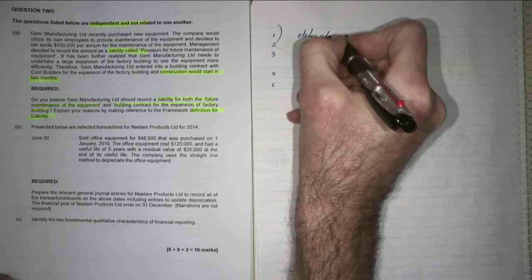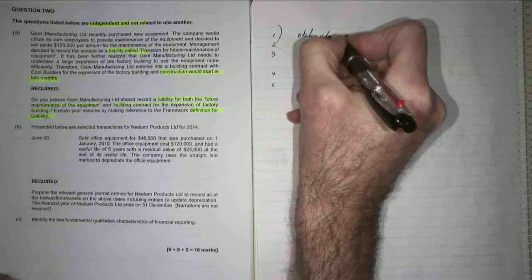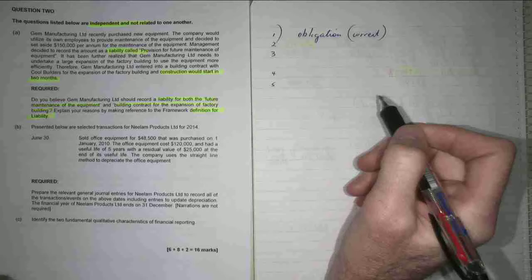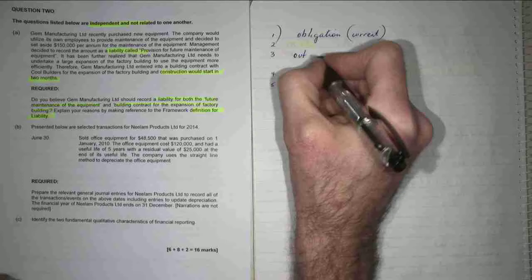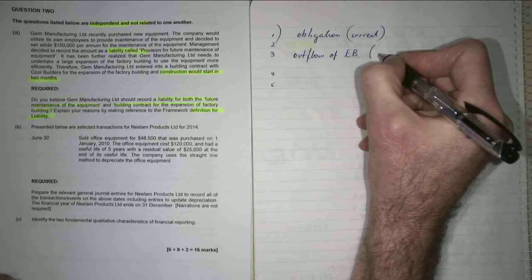Obligation, and it's a current obligation. What's the next thing? Outflow of economic benefit. So outflow of economic benefit. An economic benefit means cash or goods and services.